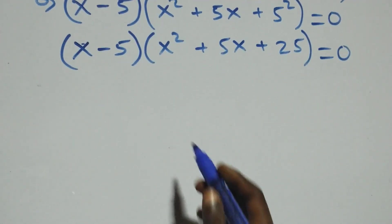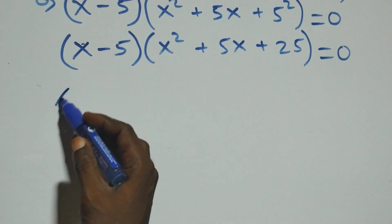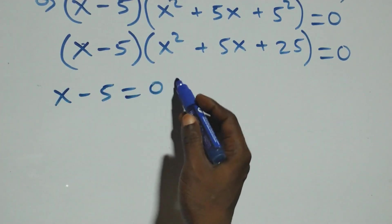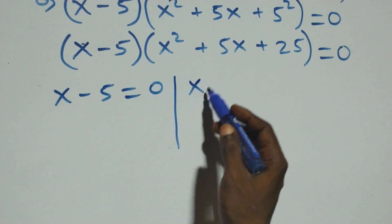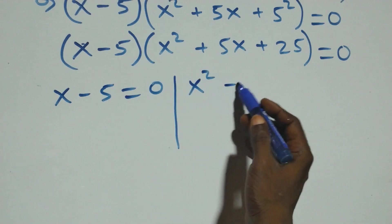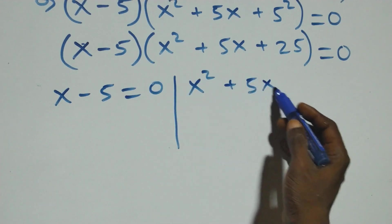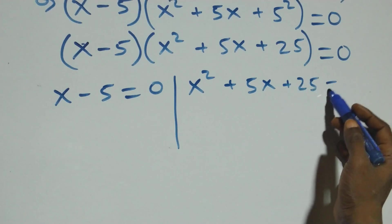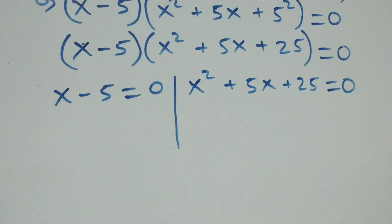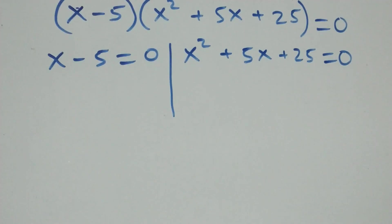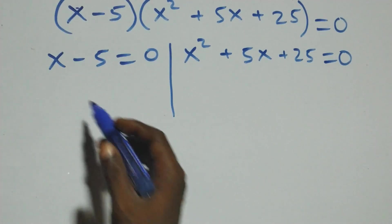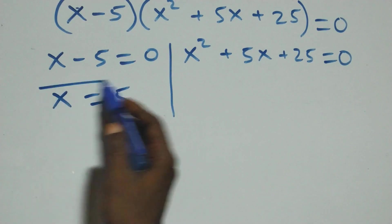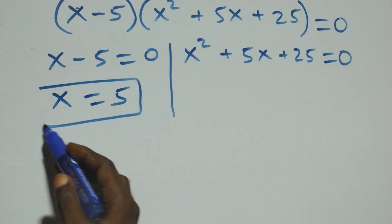Here also we have two possible cases: x minus 5 equals zero, or x squared plus 5x plus 25 equals zero. From the first factor, we have x equals 5, which is a real solution.